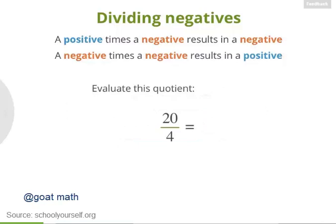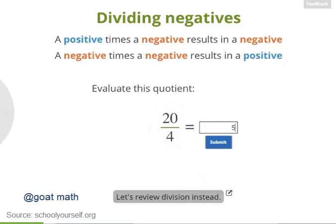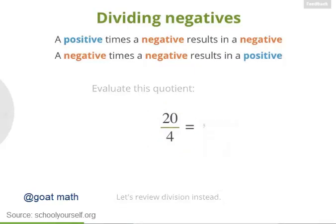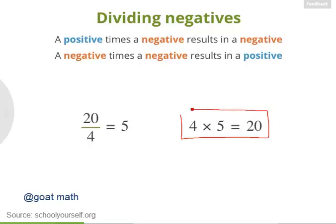Let's try some division. What's 20 divided by 4? 20 divided by 4 equals 5. This is correct because 5 is the number you can multiply by 4 to get 20.